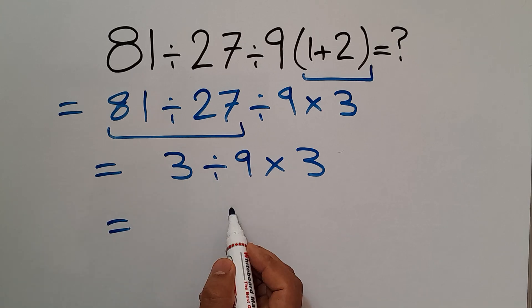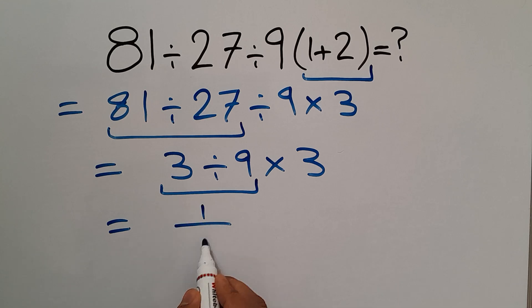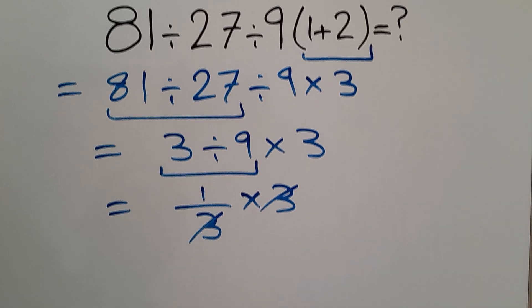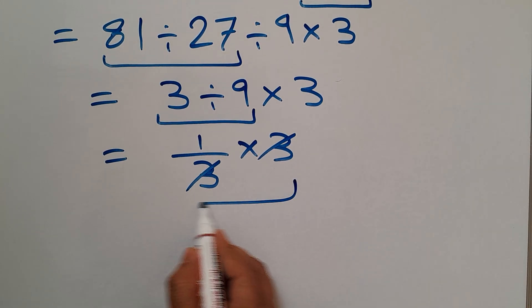3 divided by 9 equals 1 over 3. And here we have times 3. These 3 and these 3 can cancel each other out. So we have just 1.